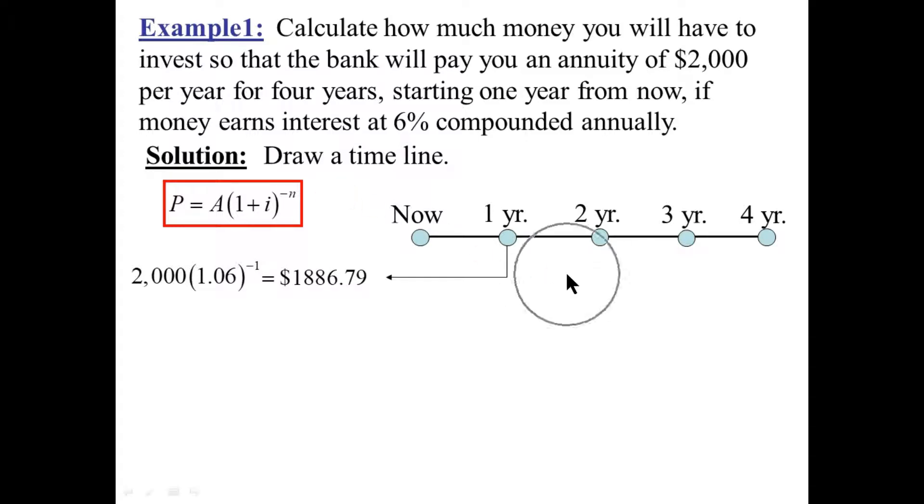Going again to generate the second payment, we'll do it again. We'll use this present value of compound interest formula. 2,000 times 1.06 to the negative 2 now because two interest periods will have gone by to generate the second one. The calculator tells us $1,779.99.